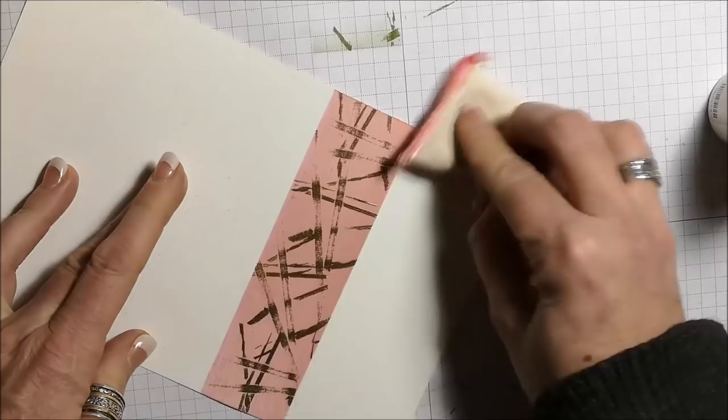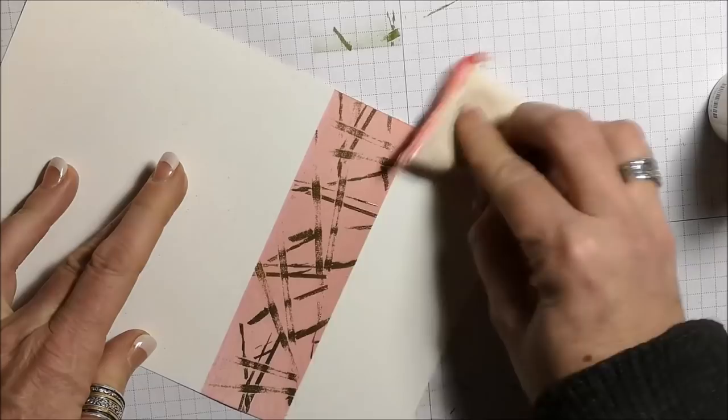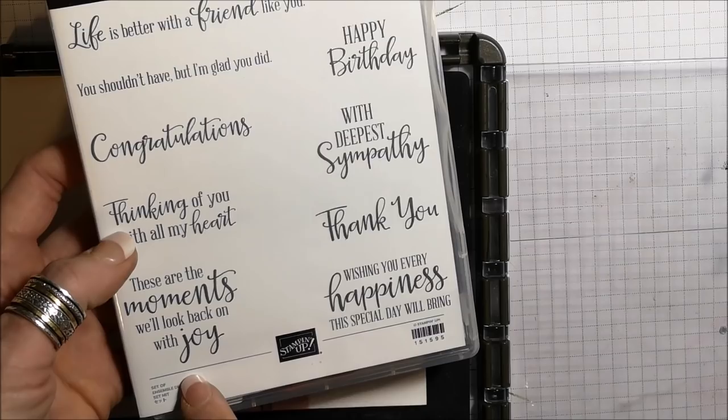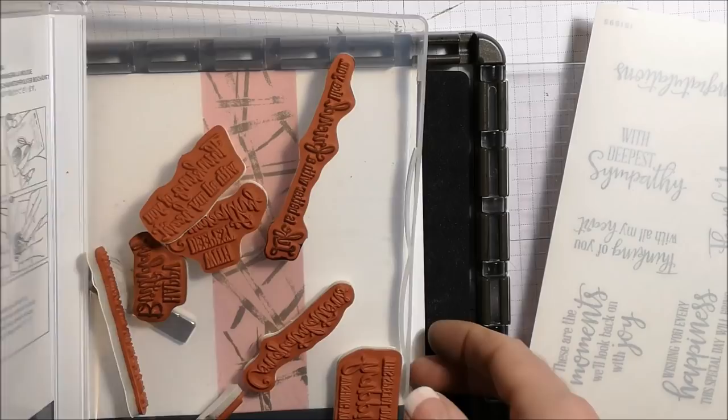So I'm going to rub over the entire piece with the embossing buddy. I have chosen my Peaceful Moments stamp set. This is a new stamp set and one that I recently got. I'm going to use this one here. These are the moments we'll look back on with joy. Normally, I put all my stamps together in one swoop. I just haven't done that with this one yet. So let's take off the label.